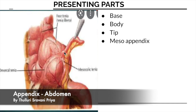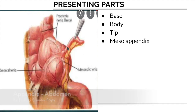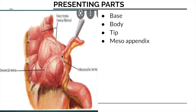Now we will see the parts of the appendix. Here the cecum is lifted and you can observe the base, the body, the tip, and the triangular peritoneal fold known as the mesoappendix. The cecum is furnished with taeniae coli like the large intestine. All three taeniae — taenia libera anteriorly, taenia mesocolica, and taenia omentalis — converge at the base of the appendix. So to trace the appendix, follow the taeniae coli and all three bands will converge at the base.